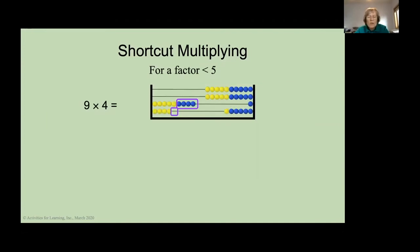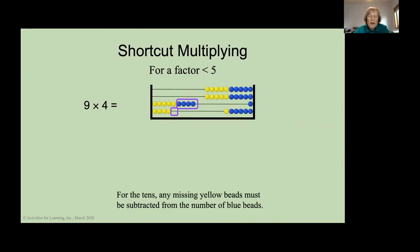And this also works, even if one of the factors is not 5. Even if it's less than 5. But when you do this, you have to take in consideration how many you're missing. How many yellow ones are missing. And they must be subtracted. So, let's do 9 times 4. There's 9. 4 blue beads on the second row from the bottom, which gives us 40. Then, we have to subtract 10 for the missing yellow one. So, that's 30 is our tens. Then, to get our ones, as usual, we multiply 1 times 6 is 6. And the answer, then, is 36. Which, indeed, it is.